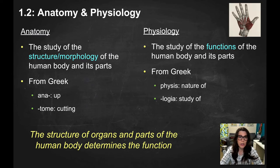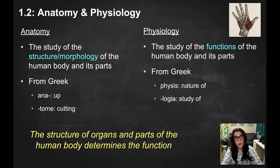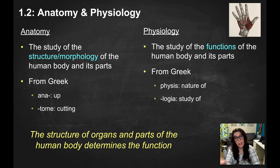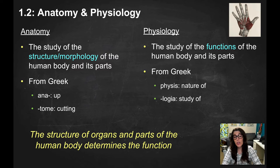That leads us to our terms of anatomy and physiology. Anatomy is the study of the structure — or the morphology, a word we're going to use a lot this year — of the human body and all of its parts. It comes from the Greek roots 'ana,' which means up, and 'tome,' which means cutting. So cutting up — a reference to discovering the structure and morphology of the body from cadaver dissection.